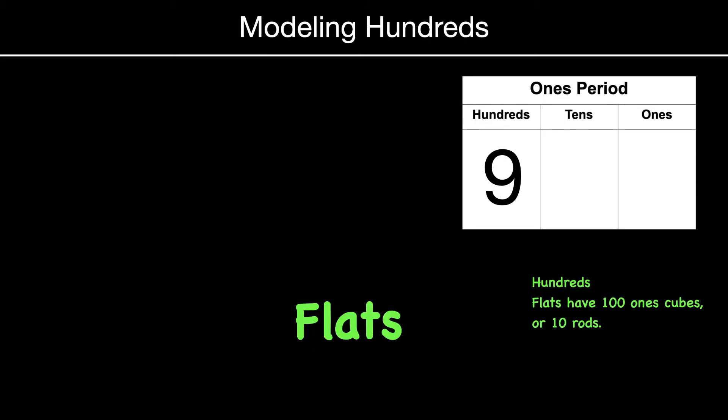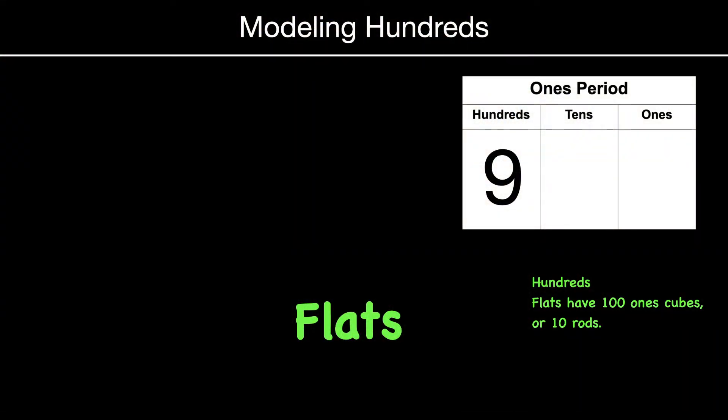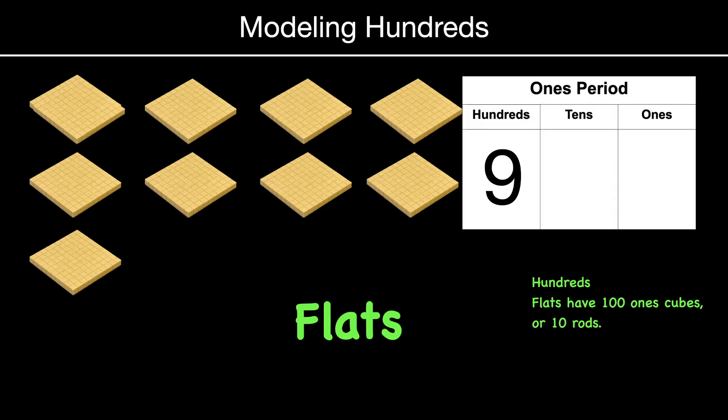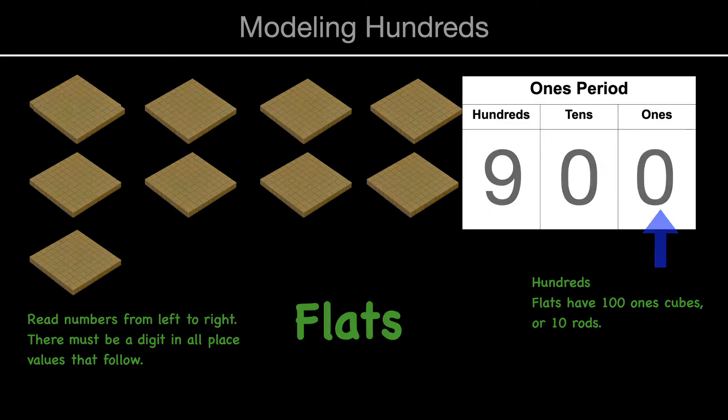Nine hundreds, hundreds use flats, and flats are equal to one hundred ones, or ten tens. And it would look like that. And nine hundred, remember, we would read that as nine and have to fill in our zeros, so that would be nine hundred.